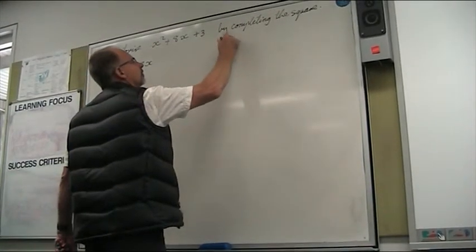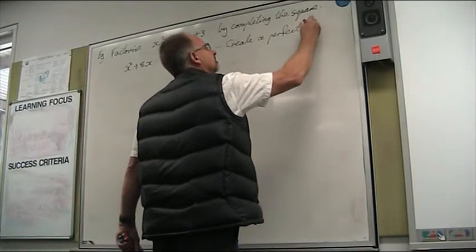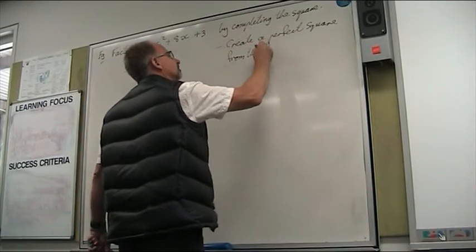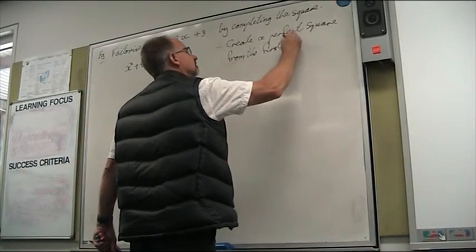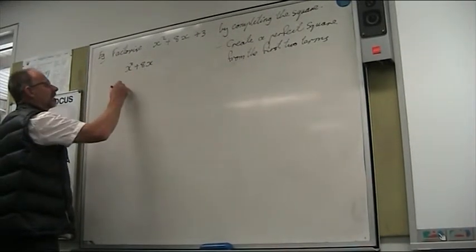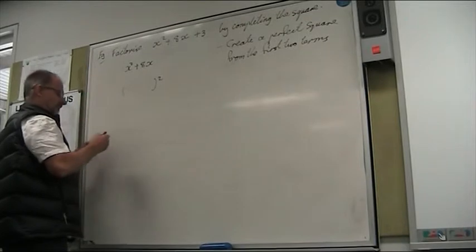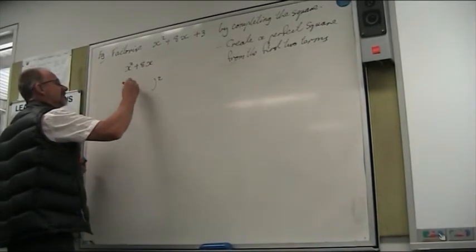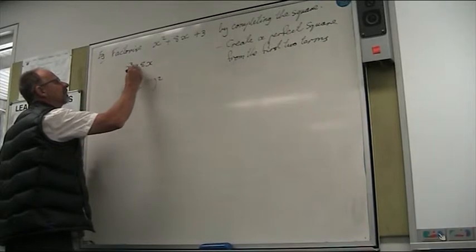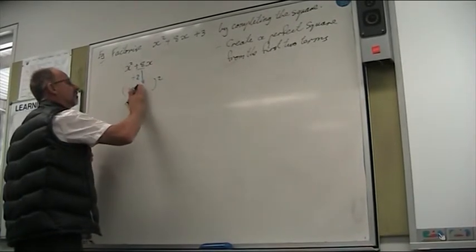So what we're going to do is create a perfect square from the first two terms. So for x squared plus 8x, we're going to create a perfect square with that. The number that goes in the bracket — in this case it's a plus — we look at the coefficient of x and we divide it by 2, so that's x plus 4.